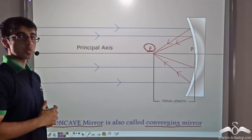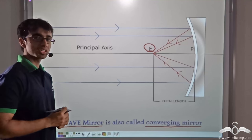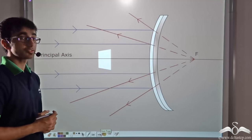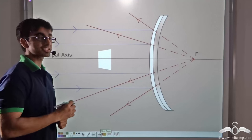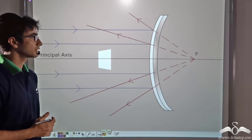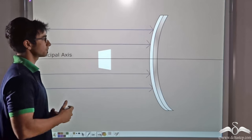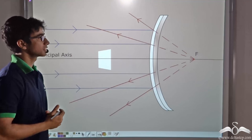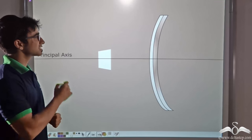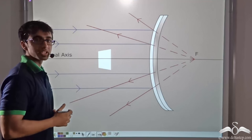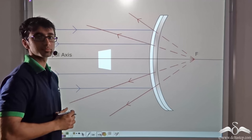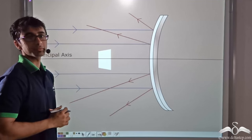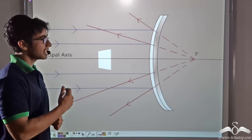Now let us find out what happens in the same experiment if we introduce a little twist. Instead of using a concave mirror, we use a convex mirror and repeat the same procedure. We keep a piece of paper in front of the mirror and allow sunlight to fall on the convex mirror. You will be surprised to notice that when the sun rays fall on the mirror, they are not burning the piece of paper. You can move the piece of paper front and back and you will still not notice the paper burning. Why do you think this is happening?